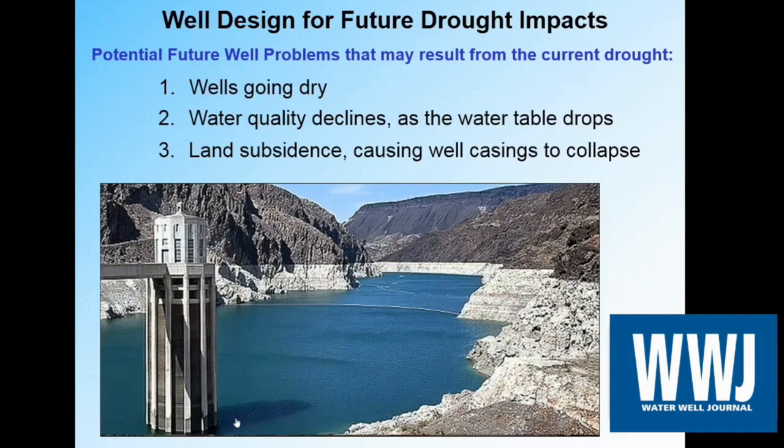In terms of the wells, what land subsidence does is the land shifts downward and the well can't handle that stress, so it collapses the well casing. How can we prevent that well casing collapse? We may still have many infrastructure disruptions, but we can at least keep our wells surviving such a land subsidence event.